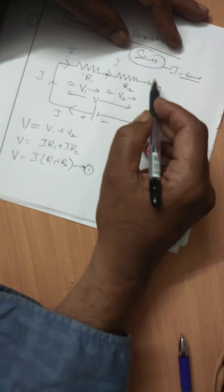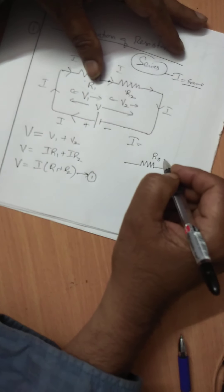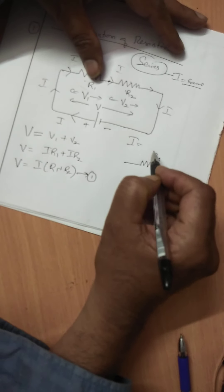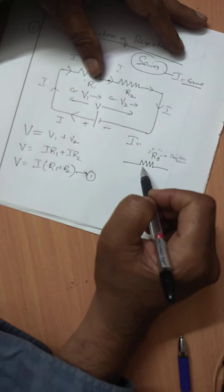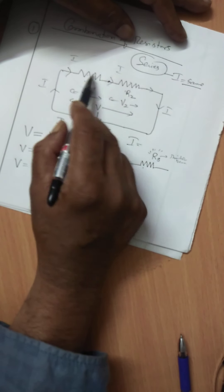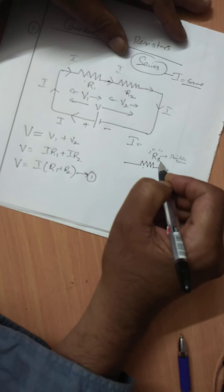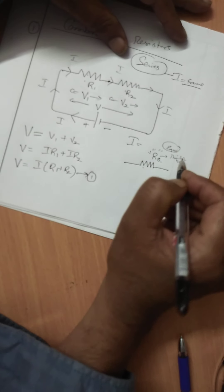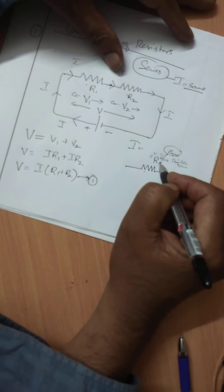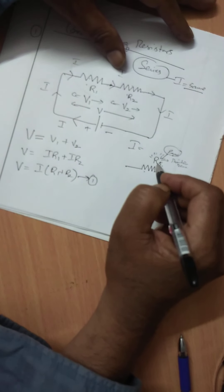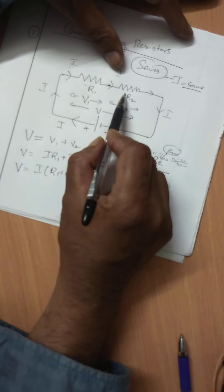Suppose the above resistors are replaced by an equivalent resistor — this is called the equivalent resistor in series. The equivalent resistance is that resistance which can produce the same effect as done by the combination of the resistors in the given circuit.